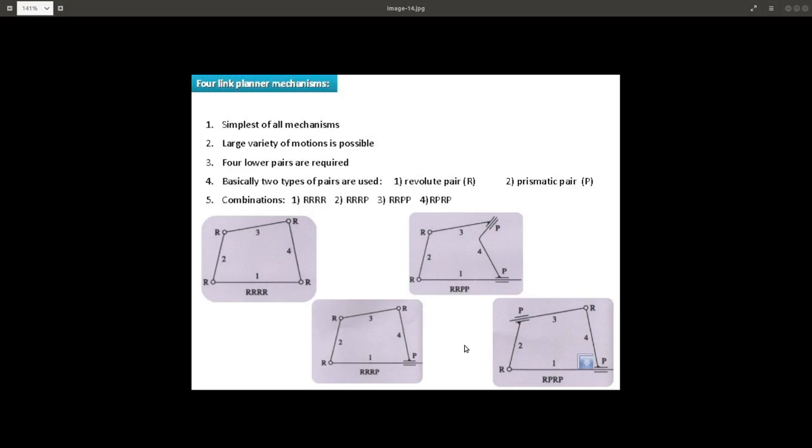That is your practice two. You have to construct these different types of four bar mechanism and you need to identify the inverse. You will be constructing it in GIM software and after that you will be observing it and based on the observation report your observation in your report on practice two.